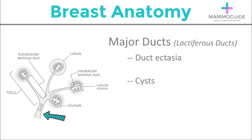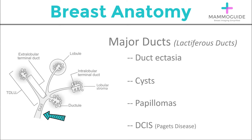Within the major ducts, you can have duct ectasia where the duct is dilated. Cysts can form off of the main duct, and papillomas are also very common intraductal masses. Ductal carcinoma in situ can present and spread throughout the main lactiferous ducts, and if it's close to the nipple, this is Paget's disease.